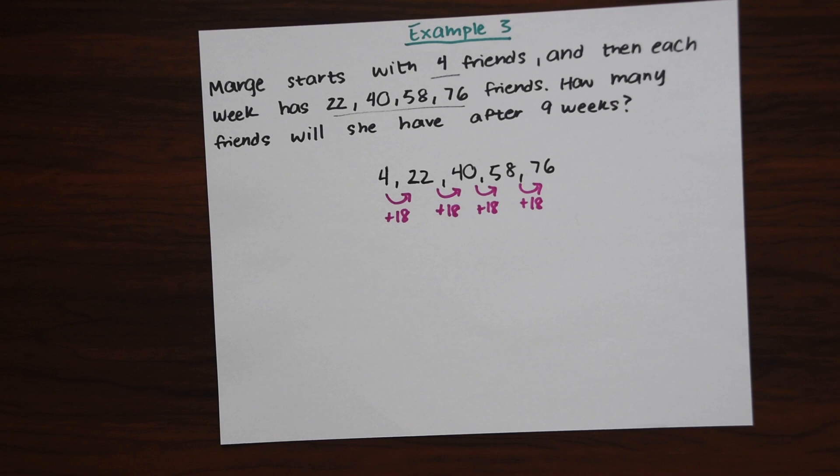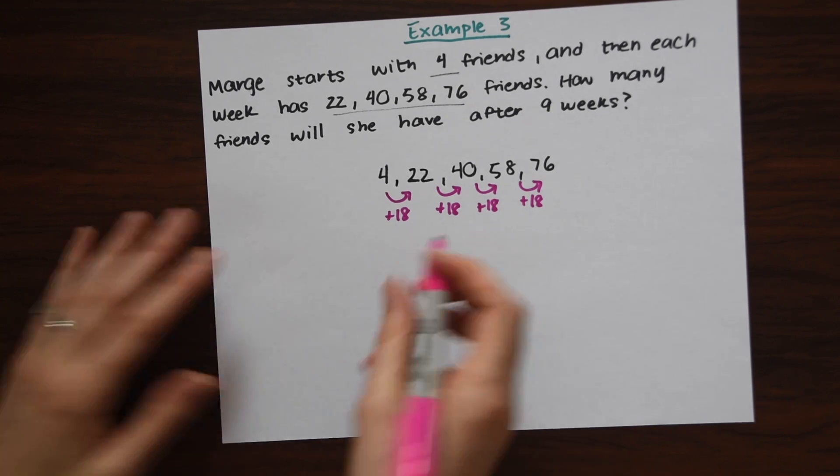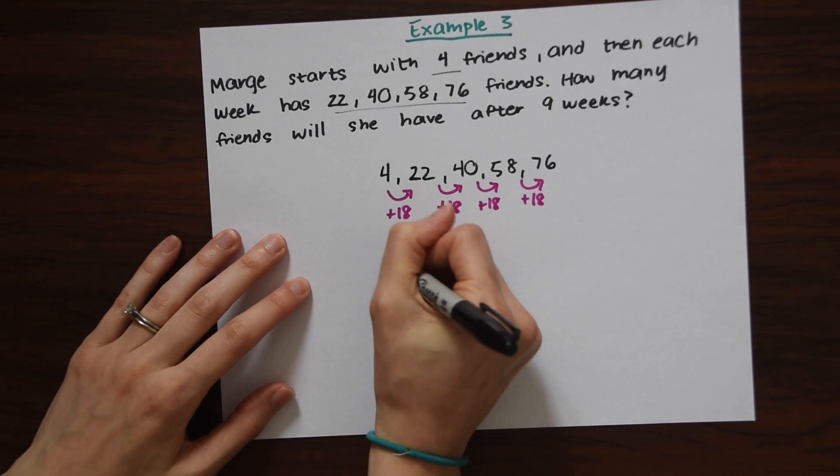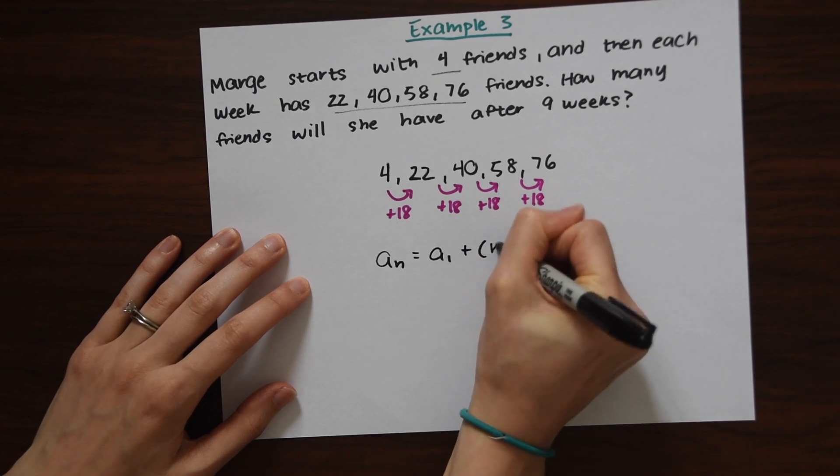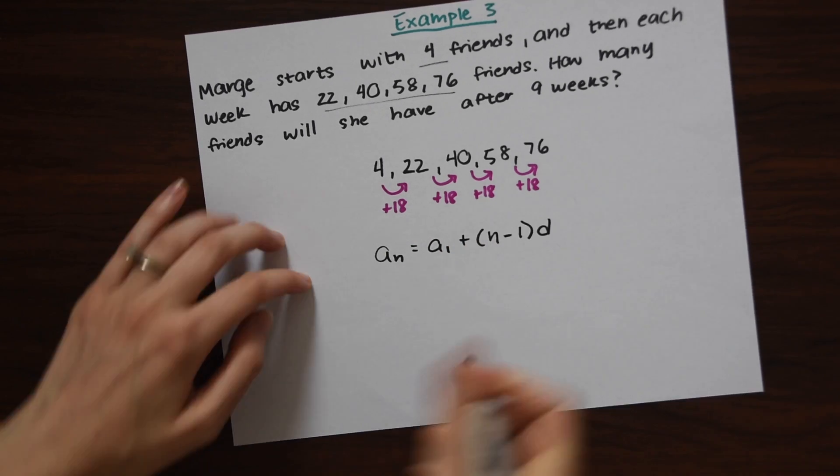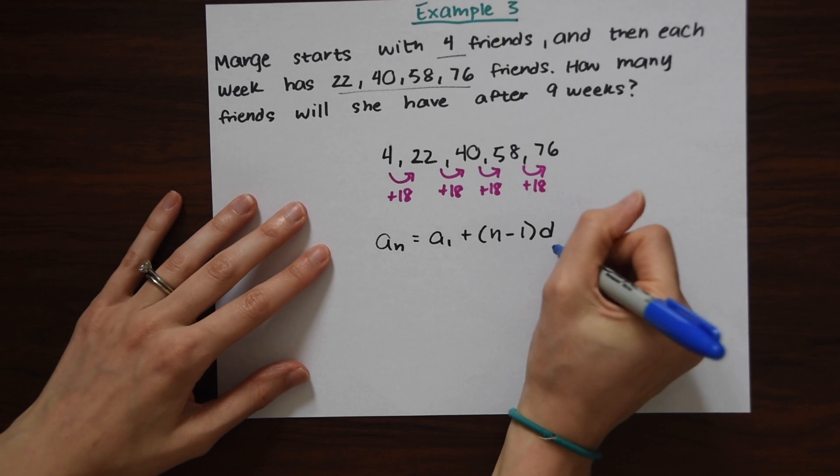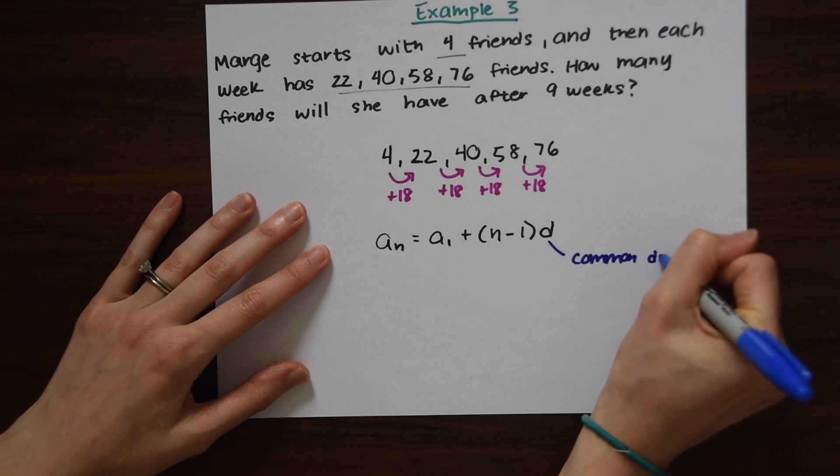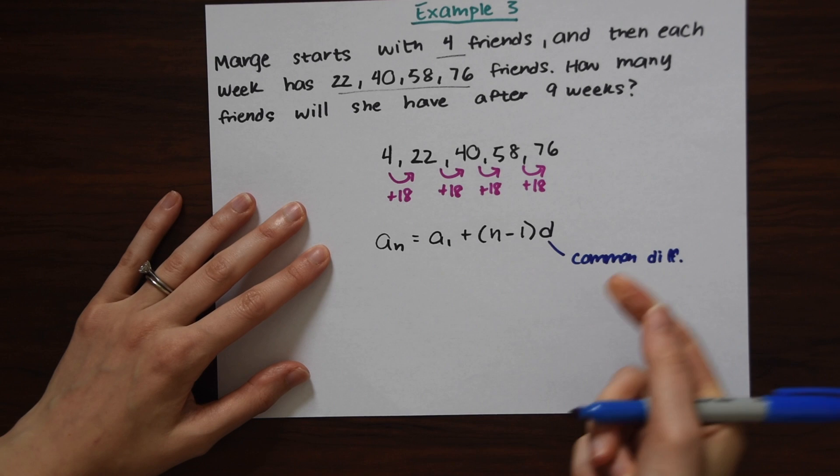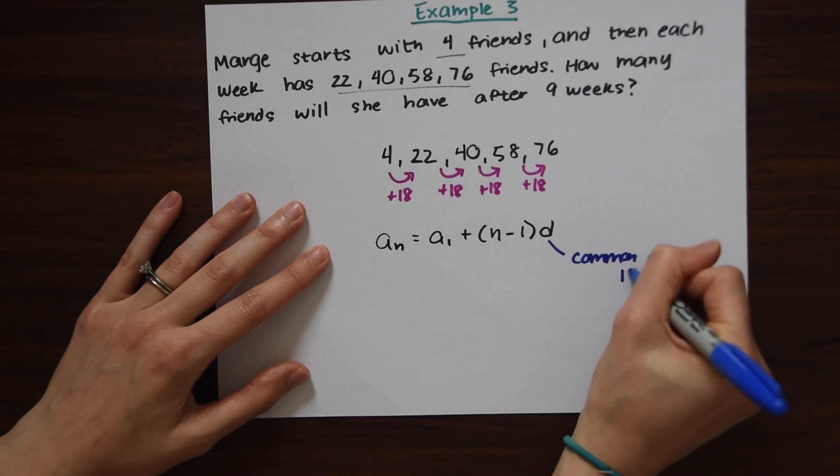So let's write out our formula. A sub N equals A sub 1 plus N minus 1 times D. So we have our common difference. So let's just write everything out again. Common difference, what you're adding or subtracting by each term, which is 18.